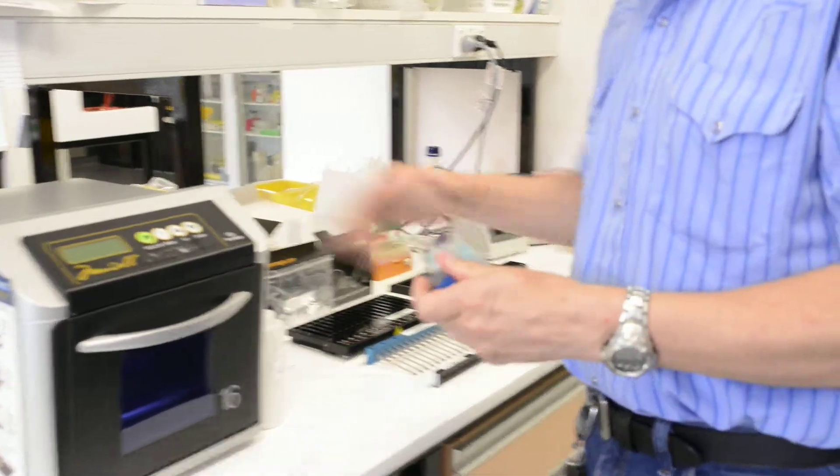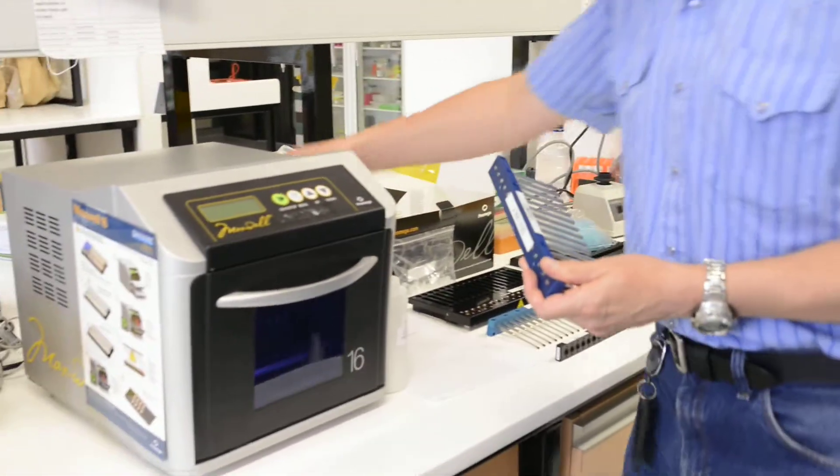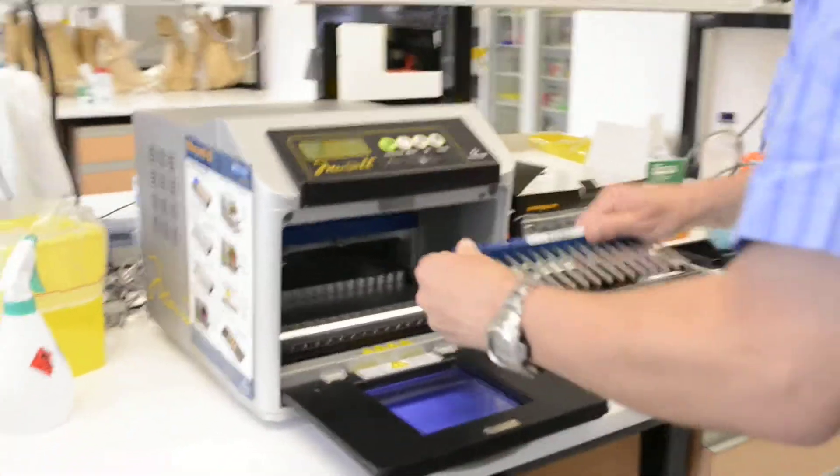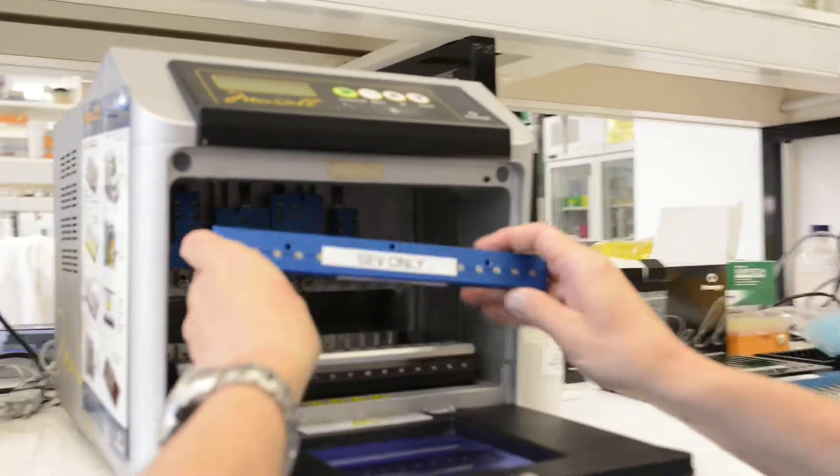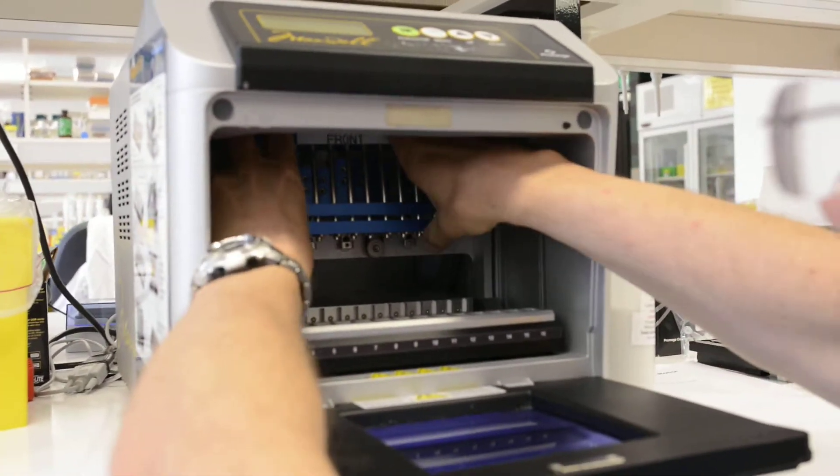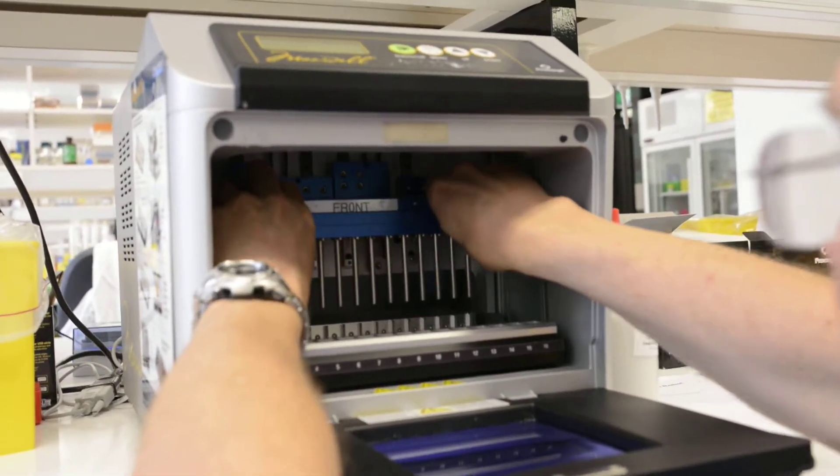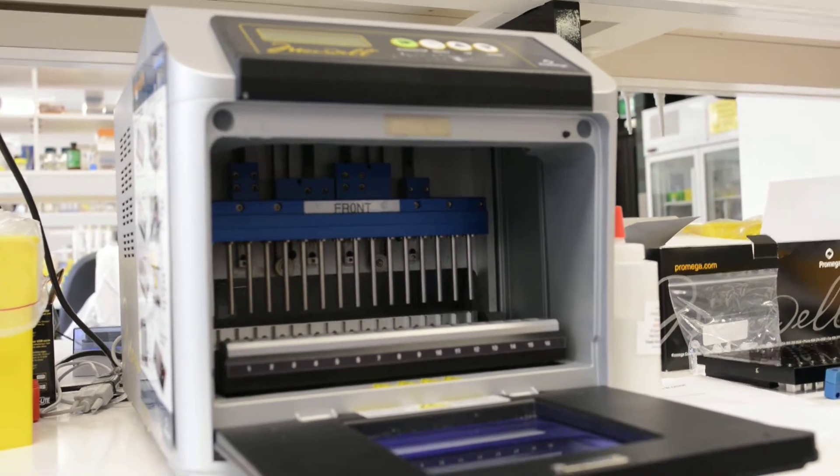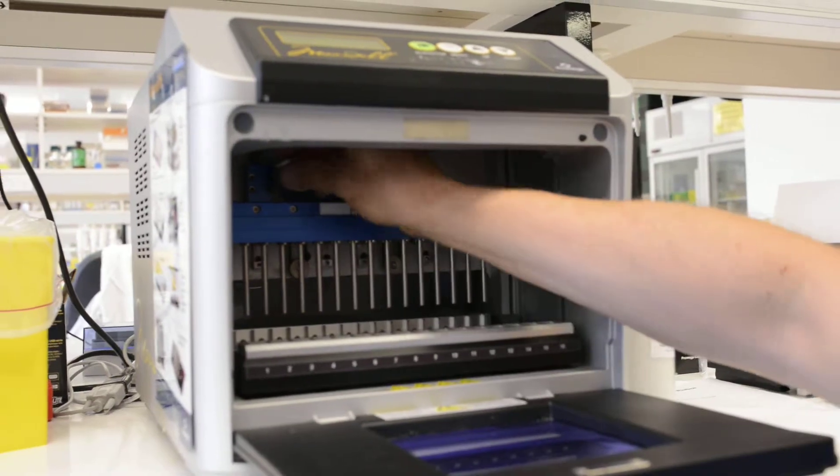First, turn the instrument off. The switch is located at the back of the instrument. Open the door and place the magnet from the top of the magnet gripper through the holes and use three screws to fix it to the magnet gripper.